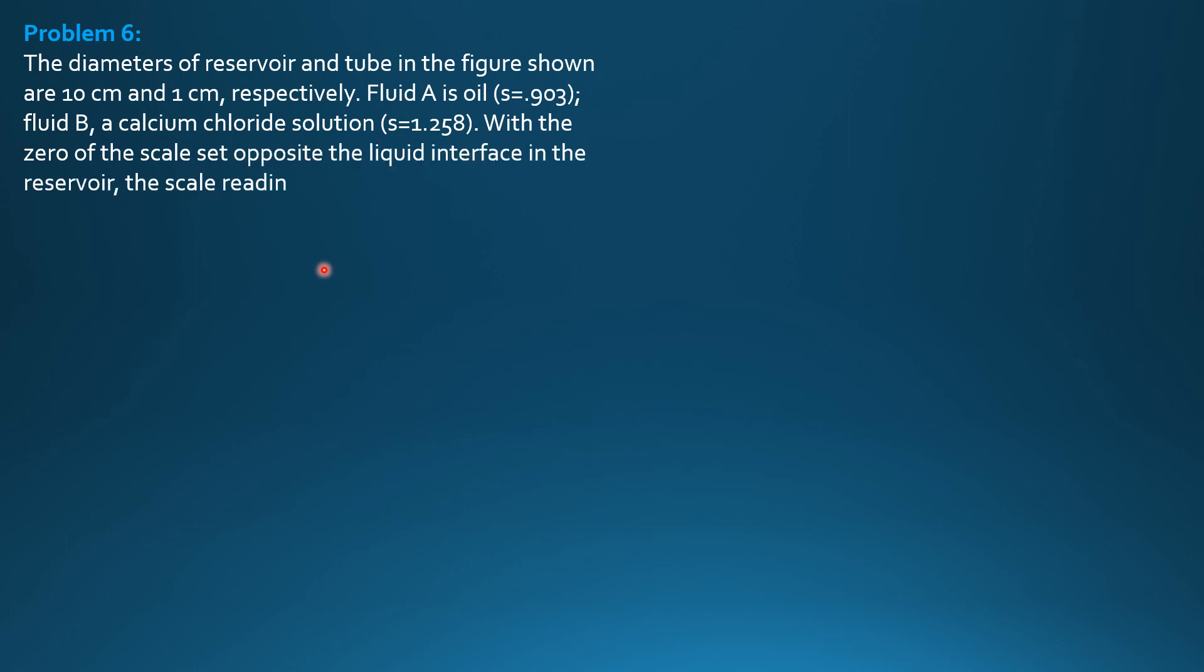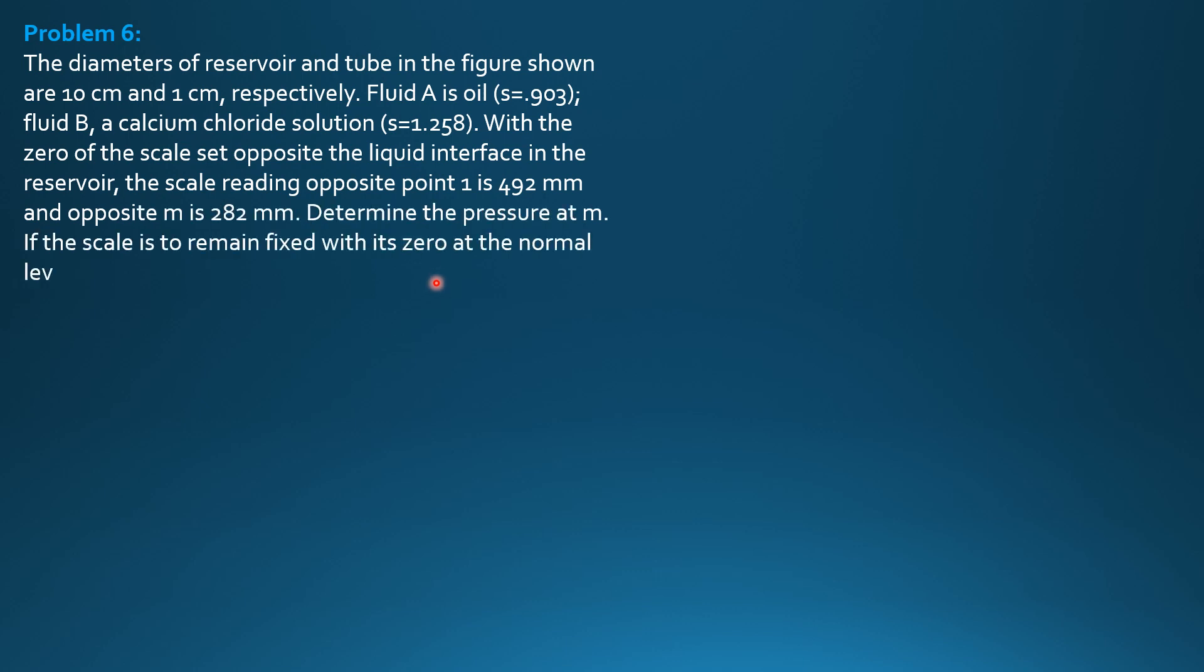Fluid B, a calcium chloride solution with specific gravity 1.258. With a zero of the scale set opposite the liquid interface in the reservoir, the scale reading opposite 0.1 is 492 mm and opposite M is 282 mm. Determine the pressure at M.